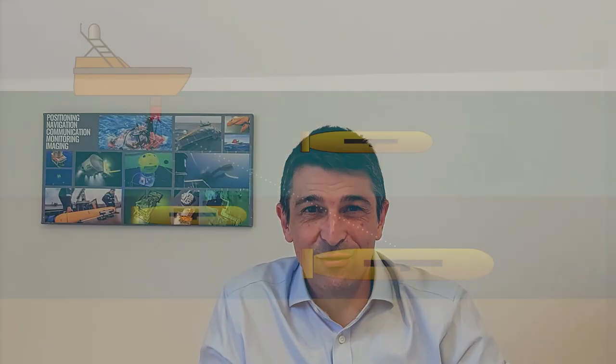Next, single interrogate. A transceiver can interrogate another transceiver exclusively. Carry out a single USBL fix or share data with a single asset without disturbing others — AUV to AUV.